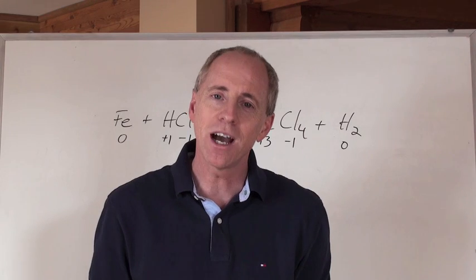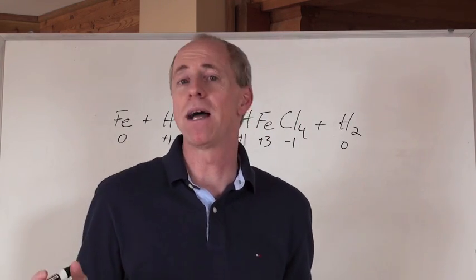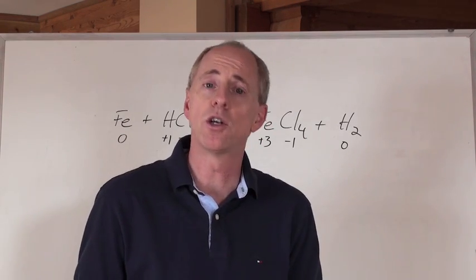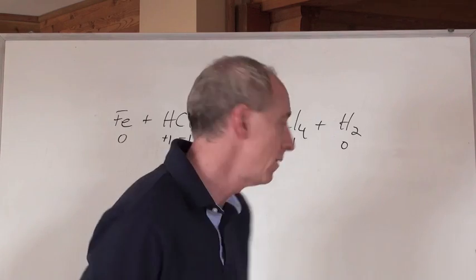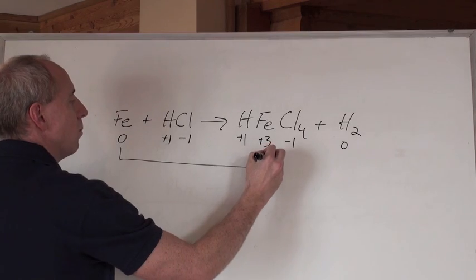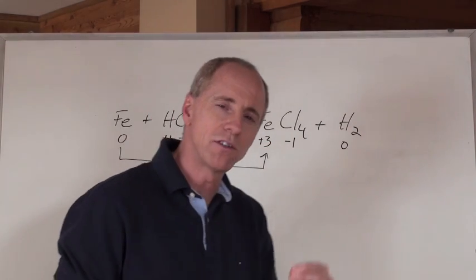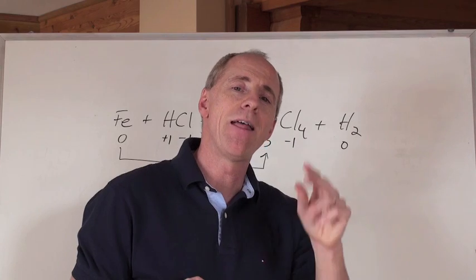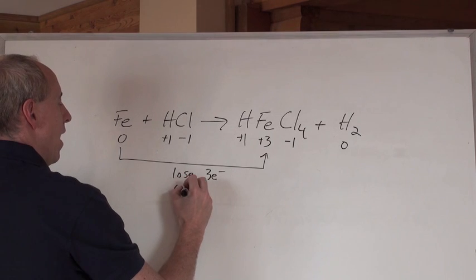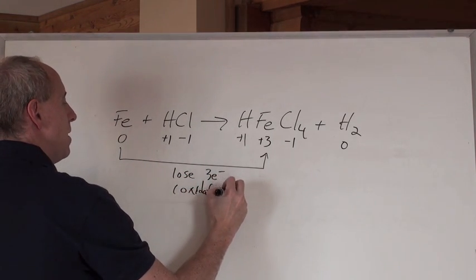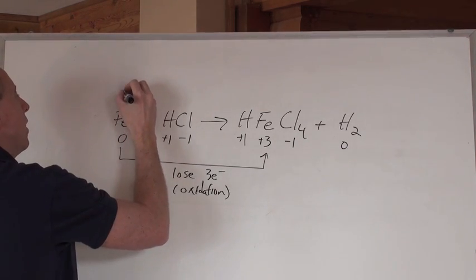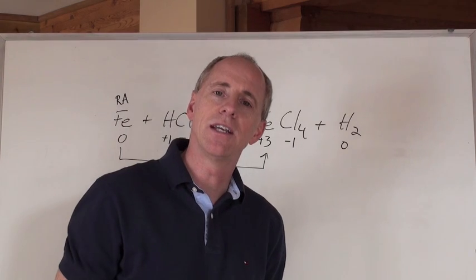It tells you who's undergoing oxidation and reduction. The question might not even be 'balance this equation' — it might just be: what's the chemical undergoing reduction or oxidation, or who's the oxidizing agent and who's the reducing agent? Well, take a look. If you're going from zero, and you change from zero on one side to plus three on the other, that means you've lost negatives to become more positive. If you lose three electrons, that's oxidation. And that means the iron is the reducing agent. You've just found the reducing agent in that reaction.